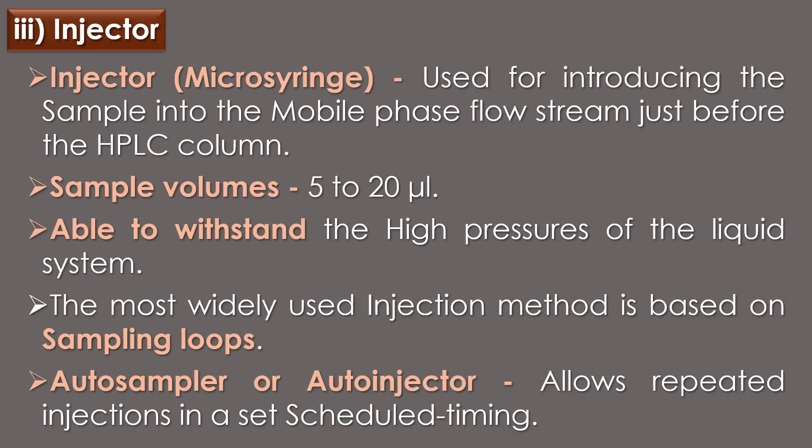An injector is placed next to the pump. Usually a micro syringe is used for introducing the sample into the mobile phase flow stream just before the HPLC column. Typical sample volumes are 5 to 20 microliters. The injector must also be able to withstand the high pressure of the liquid system. The most widely used injection method is based on sampling loops, and the use of an auto sampler or auto injector is also widely used, allowing repeated injections at scheduled times.